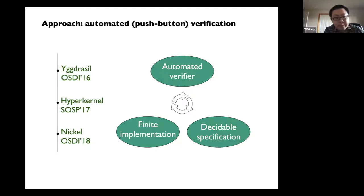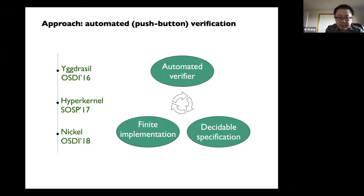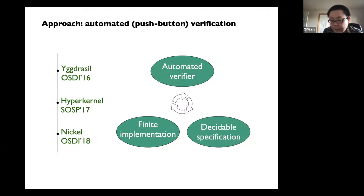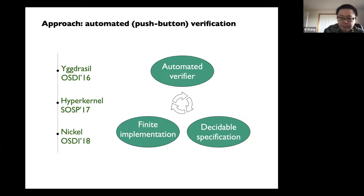We actually started out with a project called Dresser — you can imagine that as a version of FSCQ close to the file system or your lab. We also did a small OS kernel called Hyperkernel, which is a simplified version of if you took 6.828 — a redesign of xv6 for verification. We also extended it for some non-interference information flow control policies called Nickel.